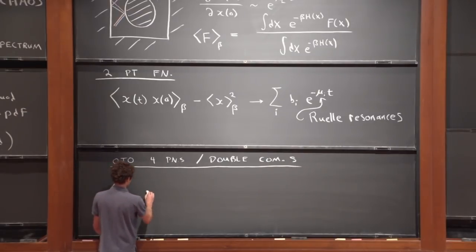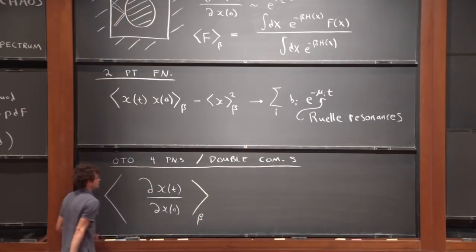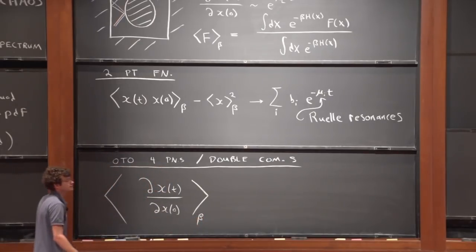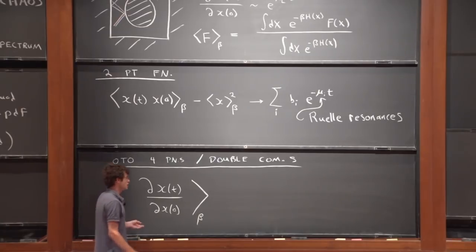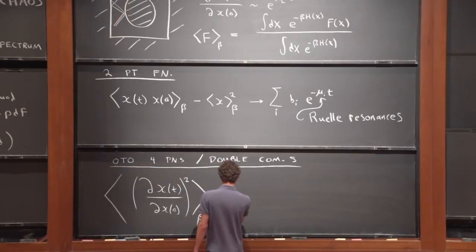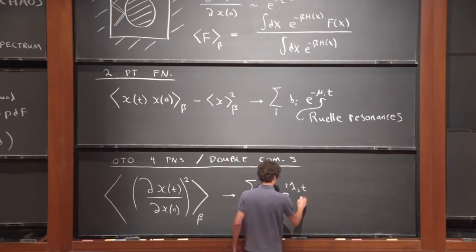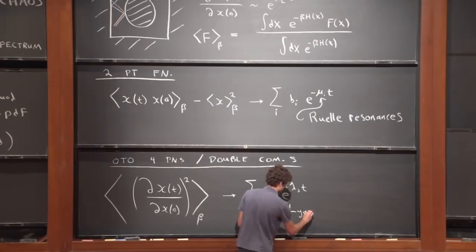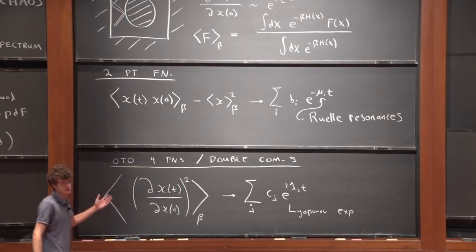This quantity is supposed to be exponentially growing along a particular trajectory, but it might have either sign. When we average it over the thermal ensemble, there can be cancellations. So a better quantity is to take the thermal average of the square of this thing, which is expected to grow with a spectrum of exponential growths where the parameters lambda_j are Lyapunov exponents. The physics of this is just the sensitivity to initial perturbations of the trajectory.